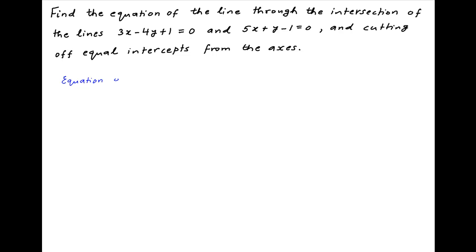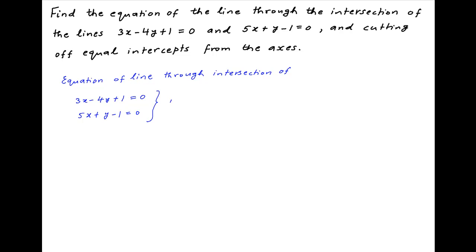The equation of the line which passes through the point of intersection of the given lines, whose equations are 3x minus 4y plus 1 equals 0 and 5x plus y minus 1 equals 0, can be written as 3x minus 4y plus 1 plus lambda times (5x plus y minus 1) equals 0, where lambda is a parameter.